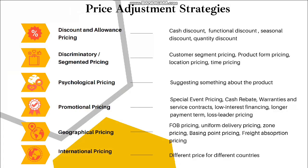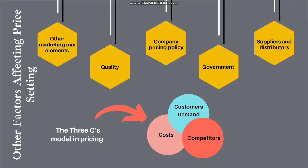The three important C's model in pricing are cost, customer demand, and competitors. Other factors affecting price settings include other marketing mix elements, quality, company pricing policy, government, suppliers, and distributors.